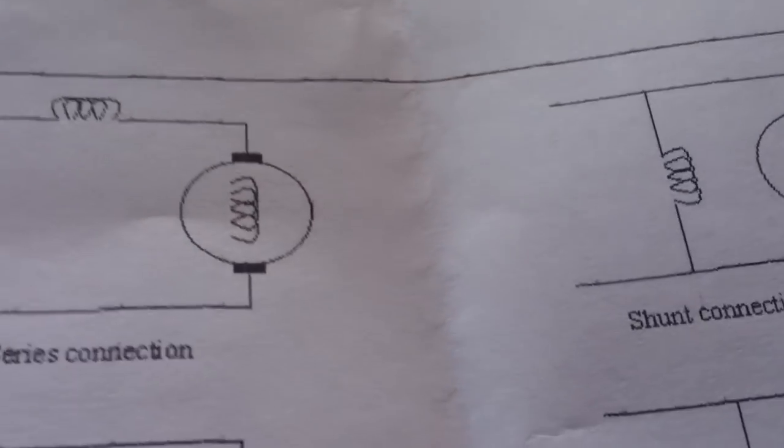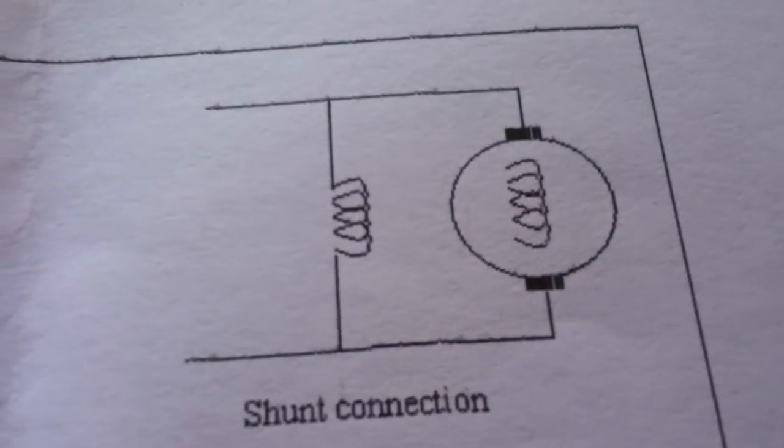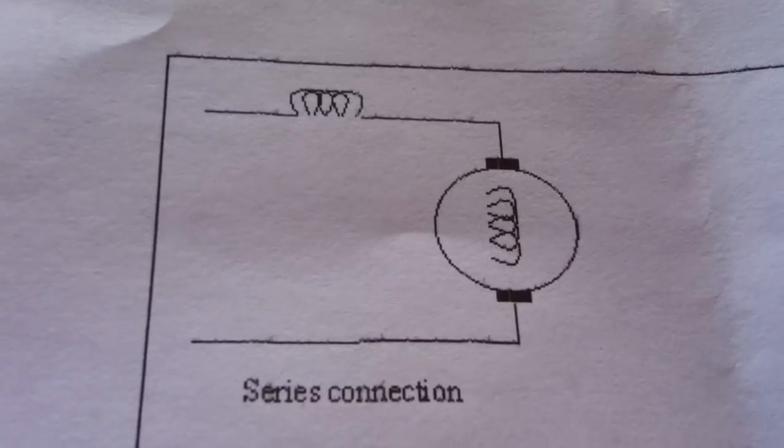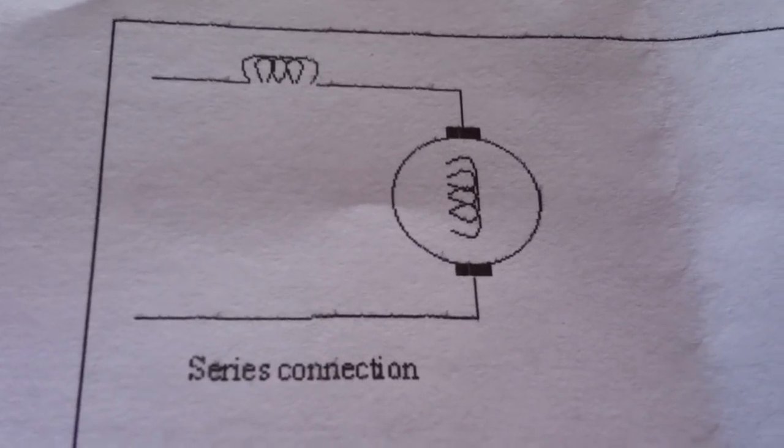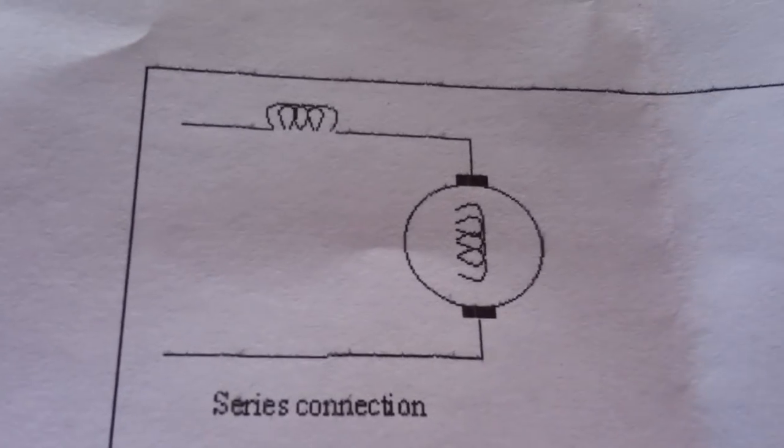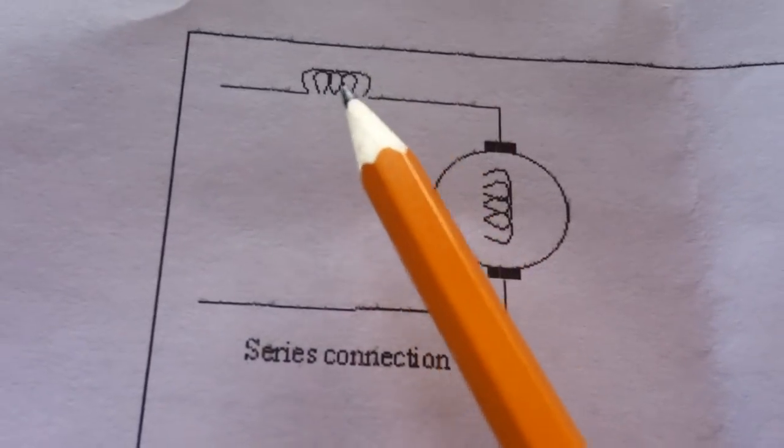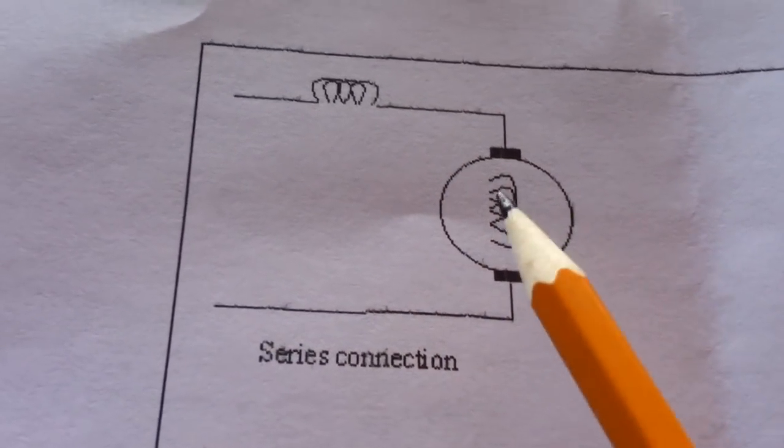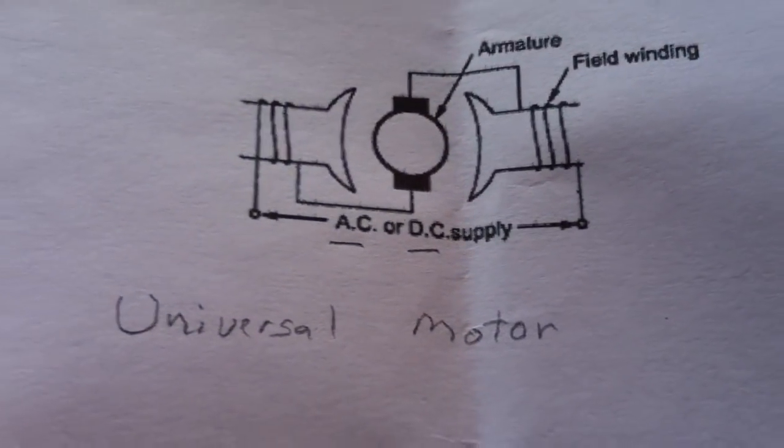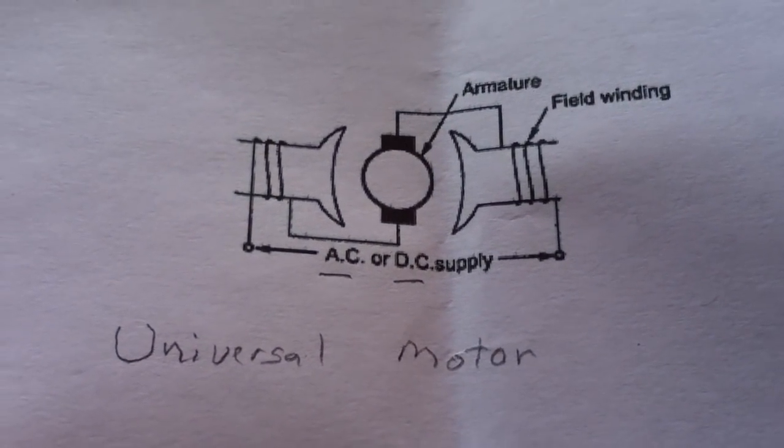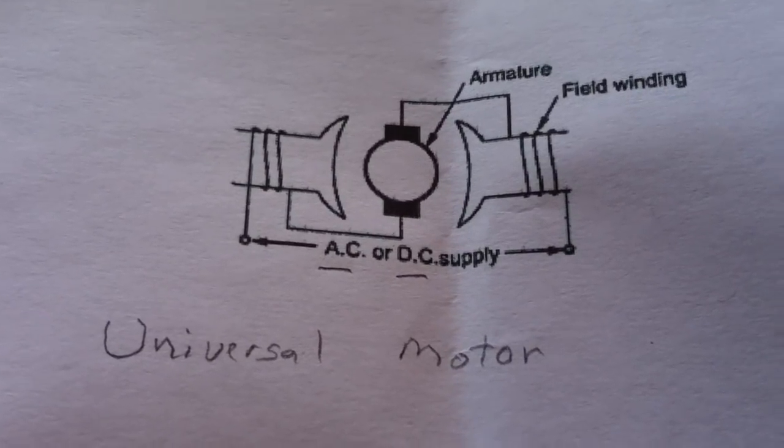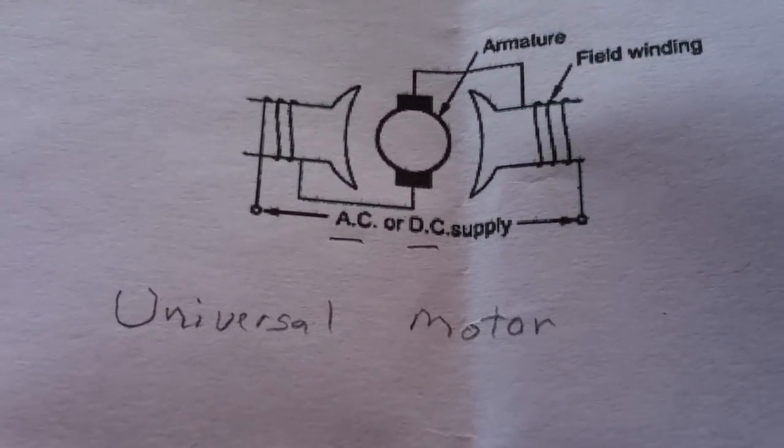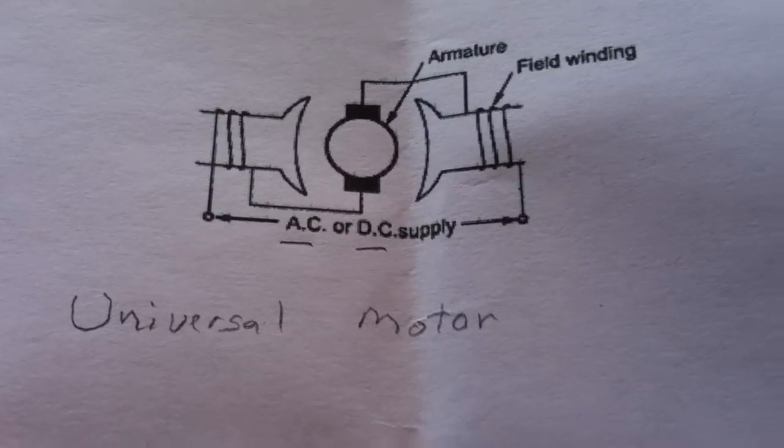And then I moved over to this, what they call a shunt connection. And where I'm heading is this series wound motor, where the field coil is in series with the rotor. And this is called a universal motor. And this is the target that I want to build, is a universal motor. And I want to do some experiments with this particular motor.